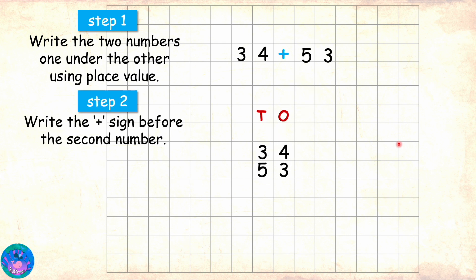Step 2 is to write the plus symbol before the second number, and that is because plus is the symbol for addition. And here it goes. We can also draw lines under the numbers being added to mark the area where the answer will get written.